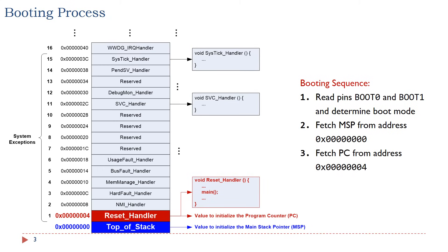In the third step, the processor copies the value stored at the memory address 4 to the program counter, PC. Note that the program counter always holds the memory address of the next instruction to be executed by the processor. Therefore, immediately after the processor boots, the processor will start to execute the function reset handler. Typically, the reset handler performs some hardware initialization first, such as initialization of the data segment and BSS segment. Then, the reset handler calls the main function and transfers control to it.